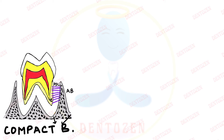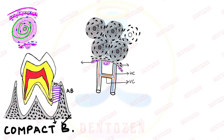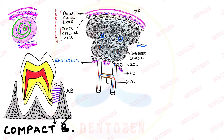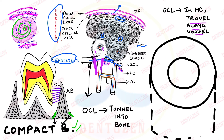In compact bone, the arrangement is the Haversian system — a central canal surrounded by concentric lamellae with interstitial lamellae in between, bounded by periosteum on the outside and endosteum on the inside. When osteoclasts cause resorption in compact bone, they first tunnel into the bone surface, then travel along the nearest Haversian canal following the blood vessel to reach the site of bone remodeling. There they begin resorption of the Haversian lamellae and circumferential lamellae.